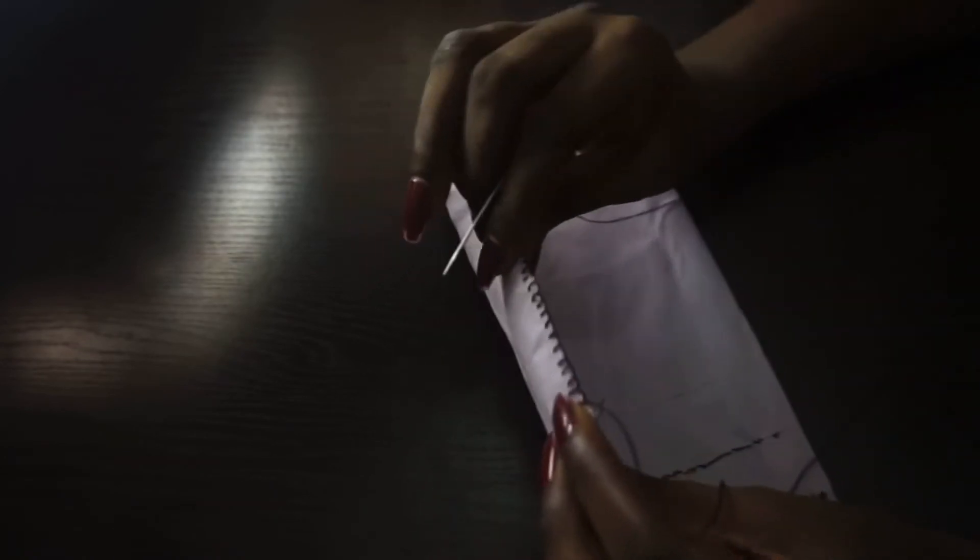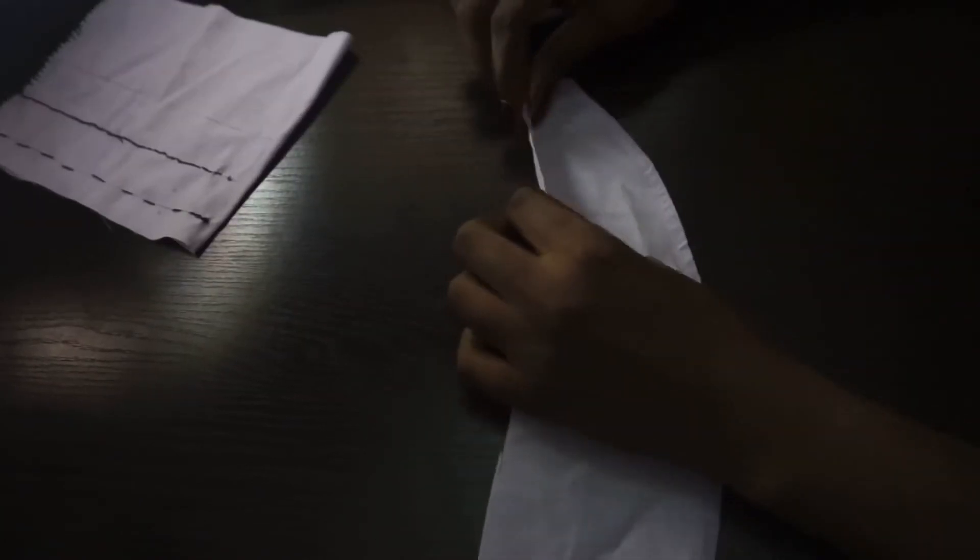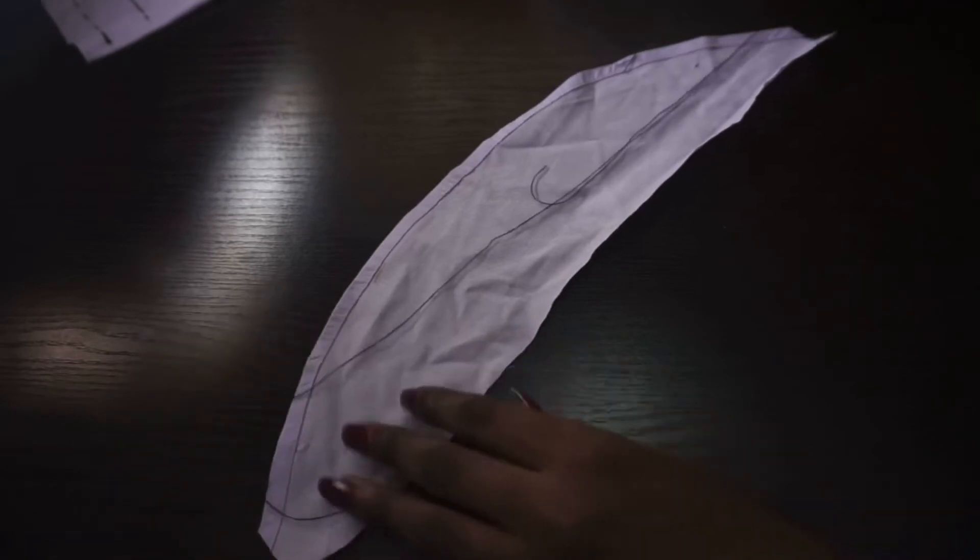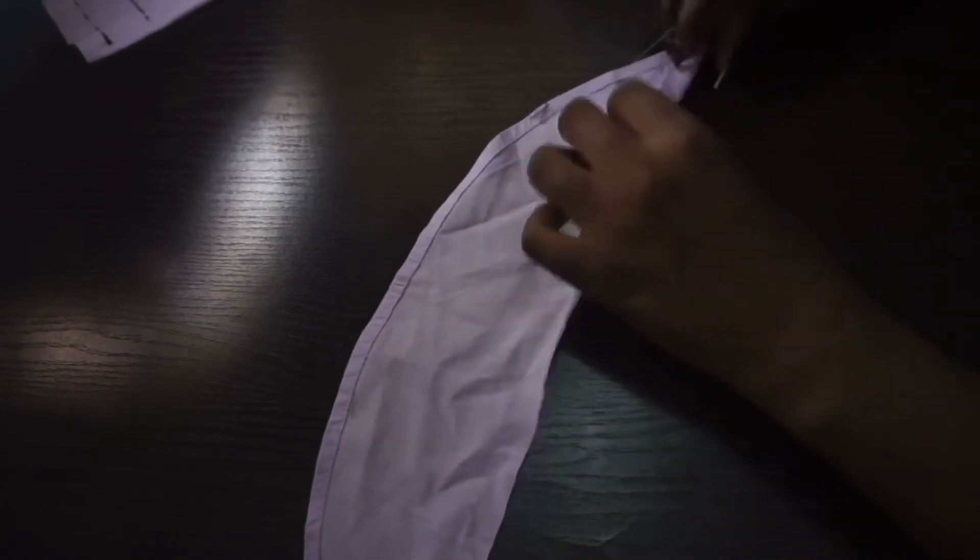And finally, last but not least, the blind hem stitch is basically to finish up the outside edge of your clothes. So let's do it. You are going to have to make one thread longer than the other like you've seen right now. So fold the edge of your piece and take your thread in like so. Secure it.